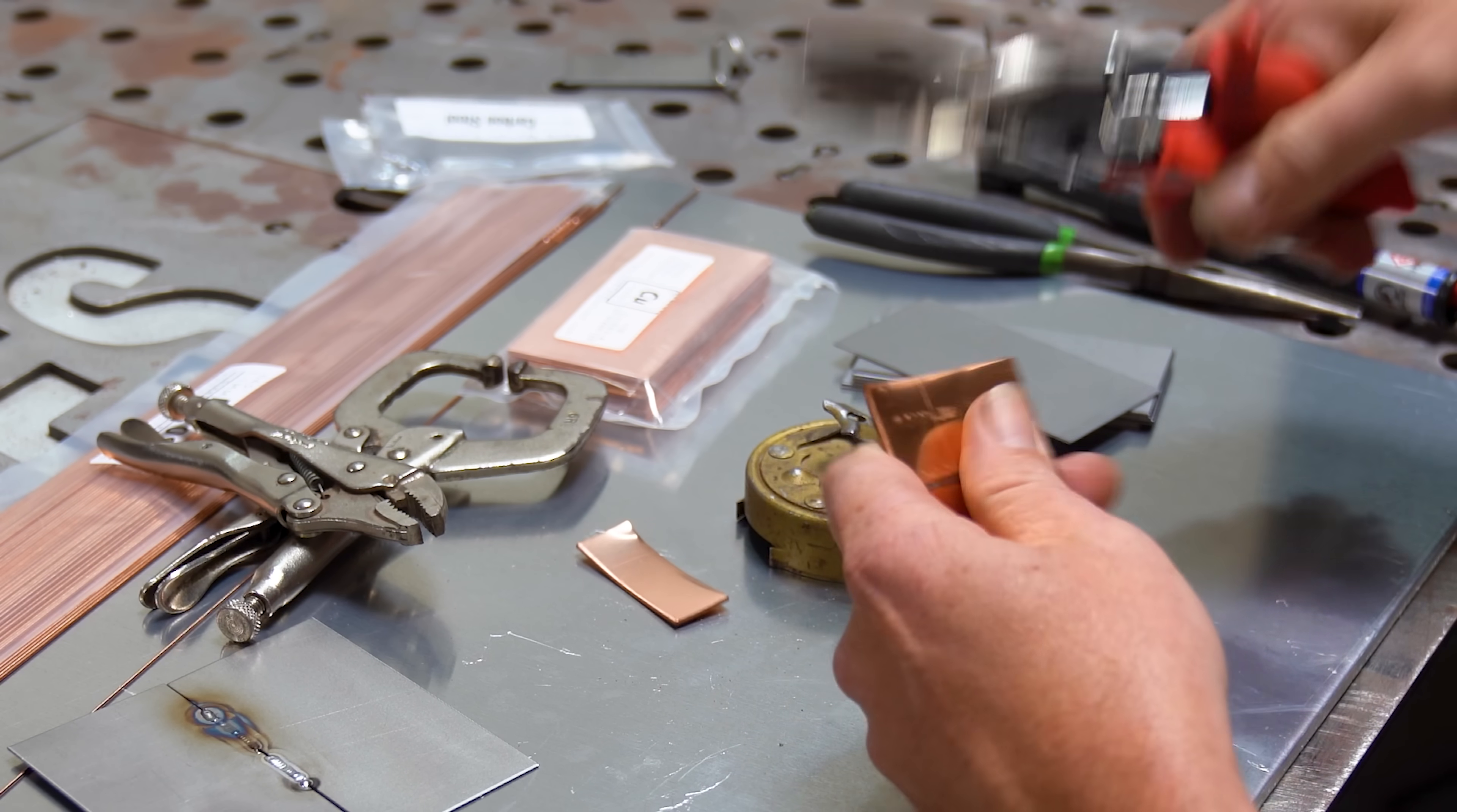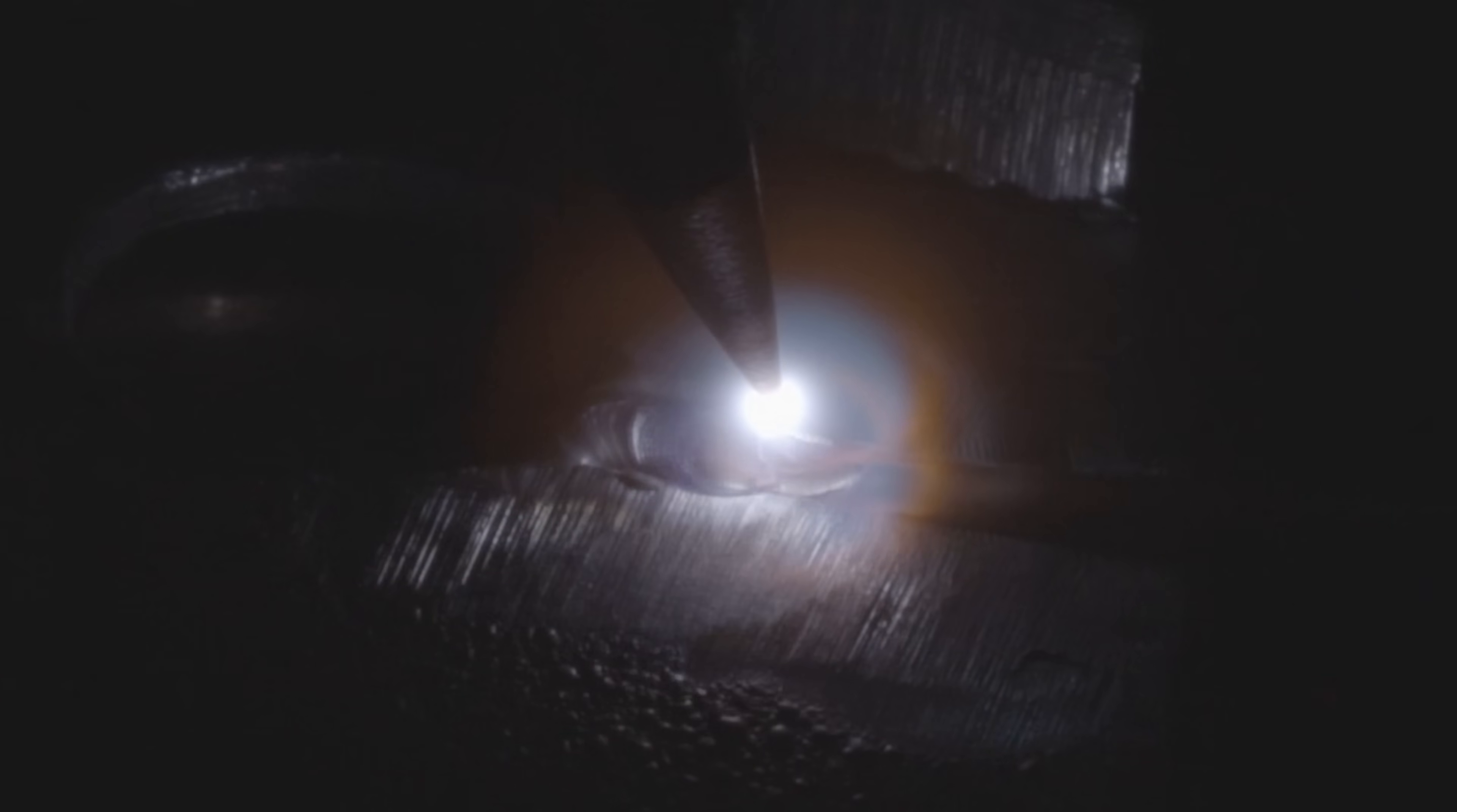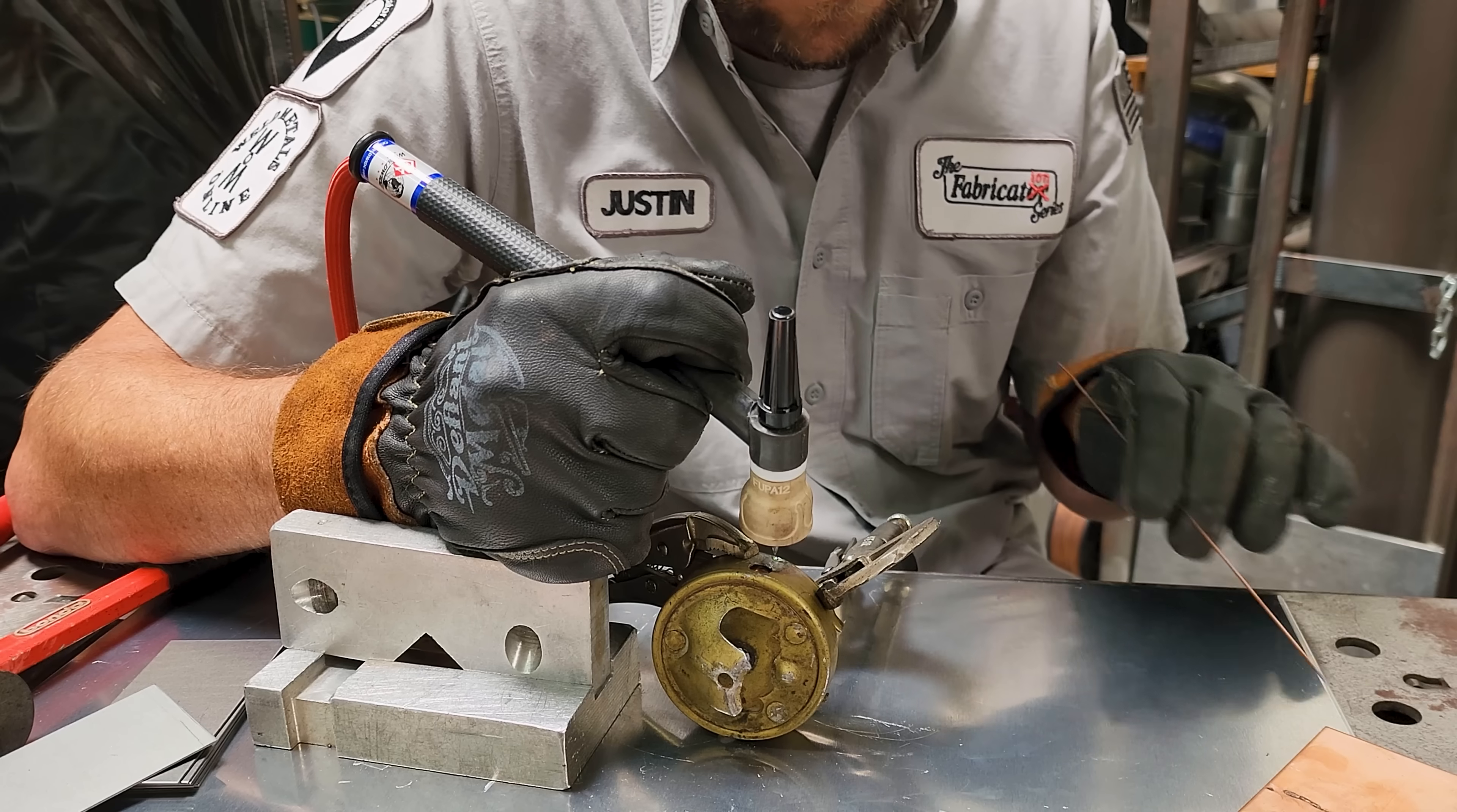First we cut, then we shape, then we clamp, and then we weld. I'm gonna have to get a different lens so I can zoom way in on that one. Maxed out on this. Well, that seemed easy enough. Let's take a look at the backside.